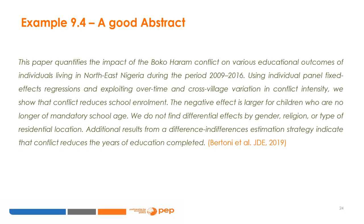Here is an example of a good abstract, taken from a paper recently published in the Journal of Development Economics. As you can see, it starts directly with the research question, gives a concise summary of the methodology, then allocates ample space for the discussion of key findings. Because it explains the consequences of a violent conflict, the policy recommendations are obvious — they don't need to be stated: stop the conflict or risk compromising the quality of your future labor force. And it is less than a hundred words.